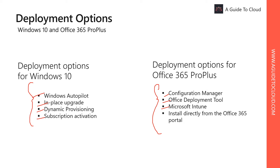Intune provides a cloud-based service that manages mobile devices and PCs, along with the applications on these devices like Office 365 Pro Plus. Finally, you have an option to install directly from the Office 365 Portal. The simplest approach is to have your licensed users self-install Office on their client devices directly from the Office 365 Dashboard. This method requires the least amount of administrative setup, but gives you less control over the deployment.